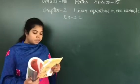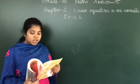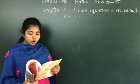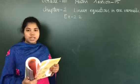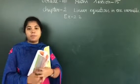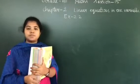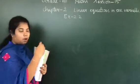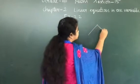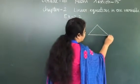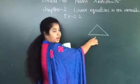Listen to the question carefully. The base of an isosceles triangle is 4/3 cm. The perimeter of the triangle is 4⅔ cm, that is 4 and 2 by 15 cm. What is the length of either of the remaining equal sides? Now, what is the meaning of an isosceles triangle? It is a triangle which has two equal sides and one side different.